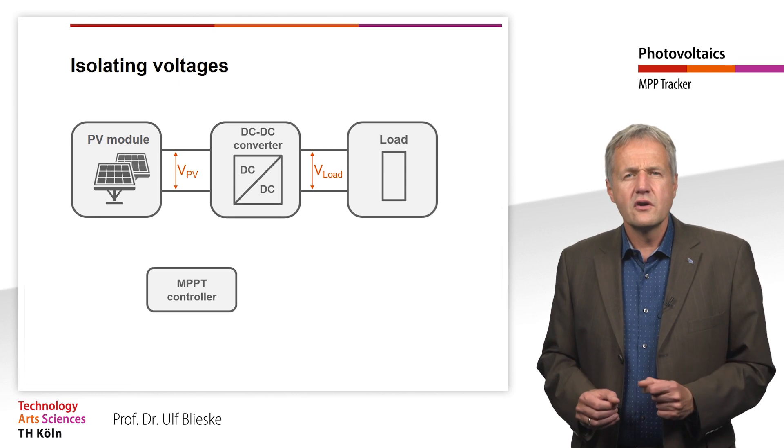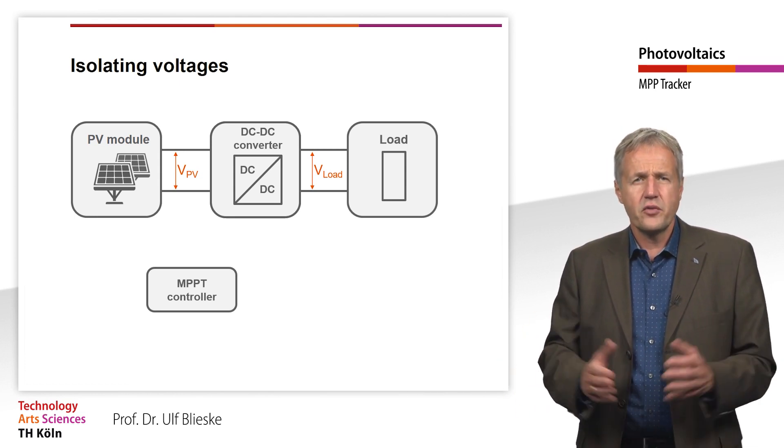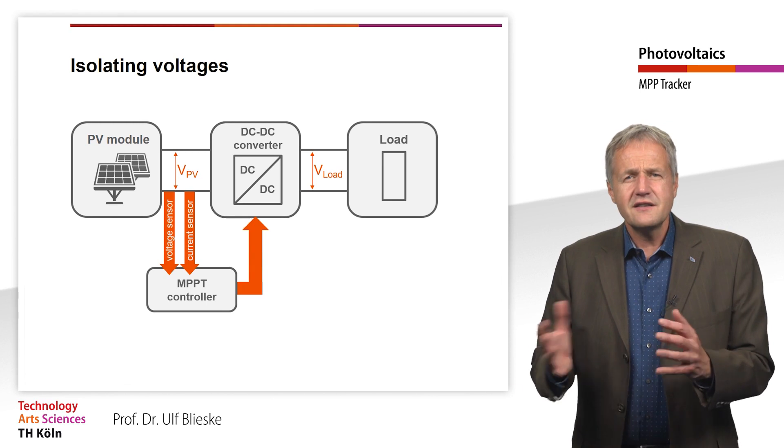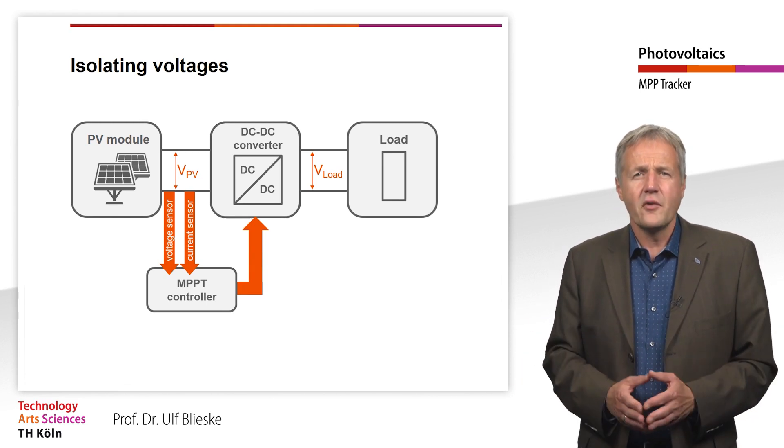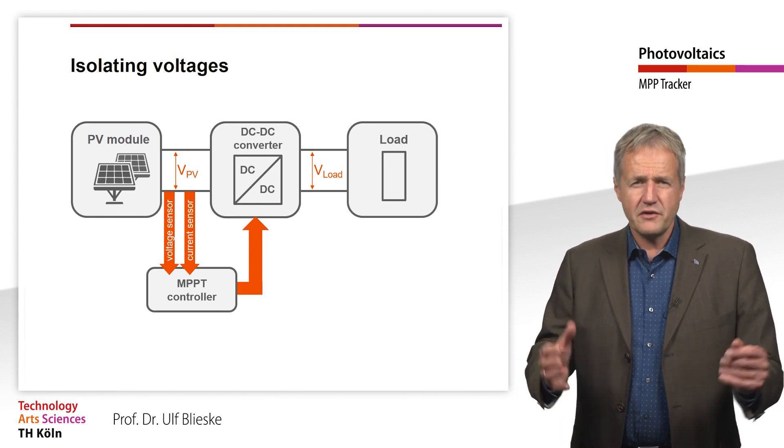As a rule, current and voltage are measured for this purpose. The DC-DC converter then operates the module at the voltage determined by the MPP tracker.